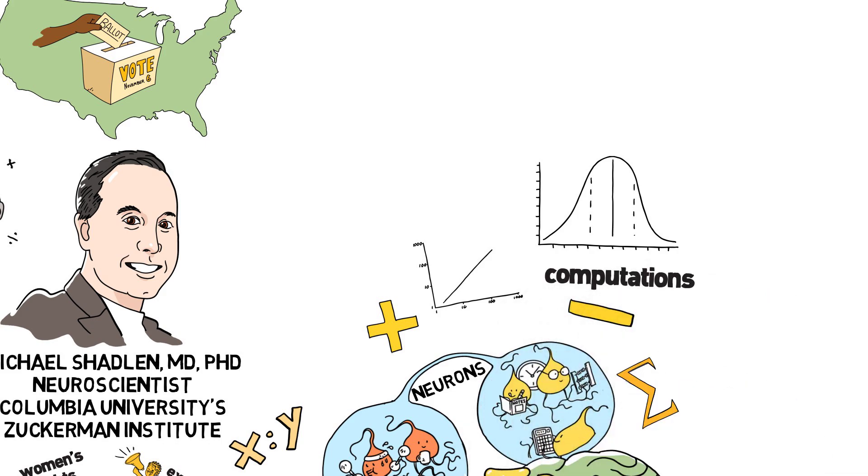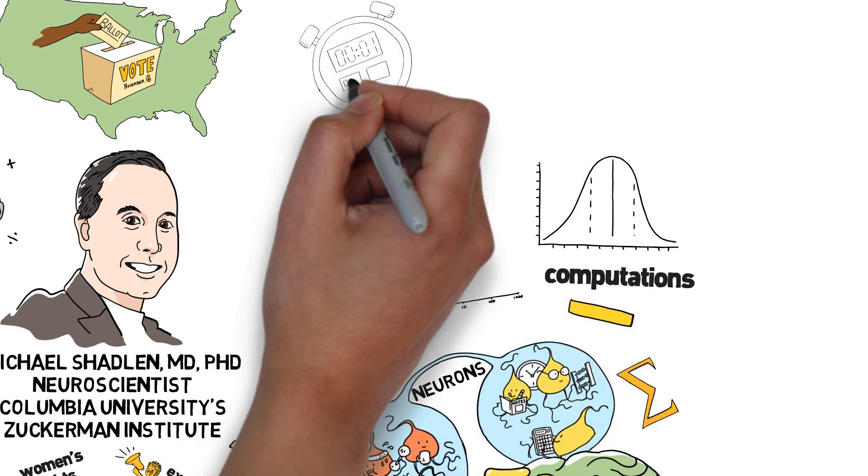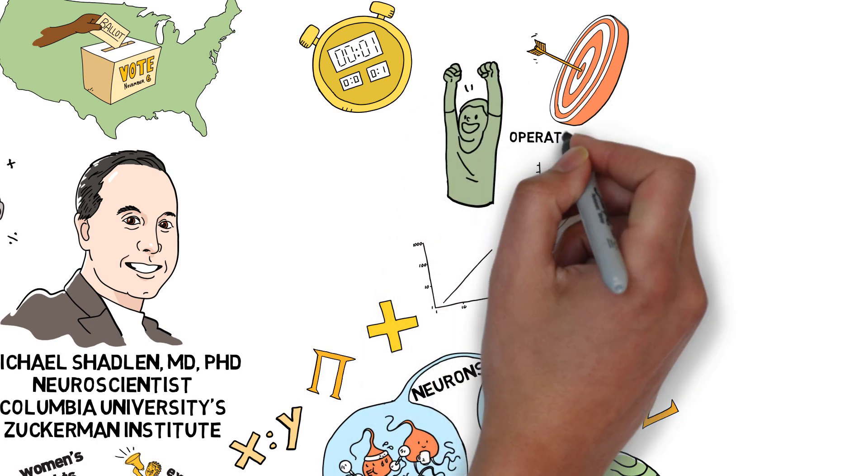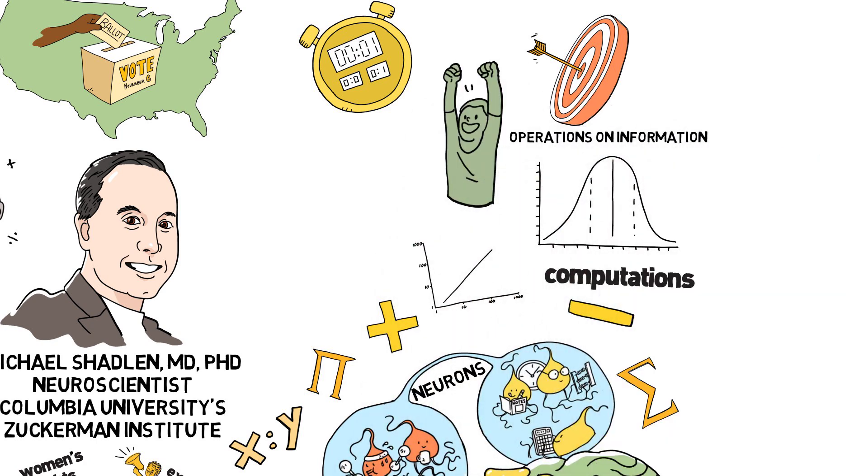All the computations that we've discovered, the trade-off between speed and accuracy of decisions, how confident we are in a decision, comes down to operations on information, and those operations are best articulated in the language of mathematics.